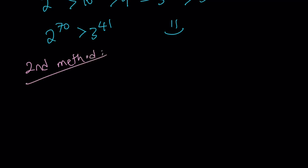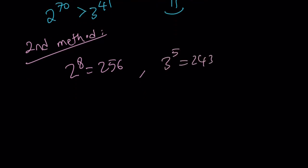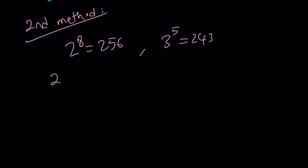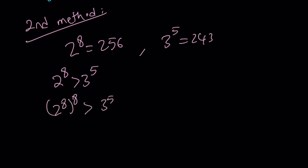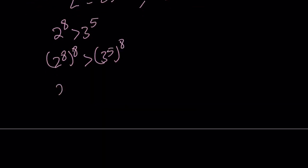My second method involves using powers of 2 and 3 instead of using a 10. We have 2 to the power 8 equals 256, and 3 to the power 5 equals 243. Again, those numbers are pretty close. So from here we can safely say that 2 to the 8th power is greater than 3 to the 5th power. Now let's go ahead and raise both sides to the 8th power, and this gives us 2 to the power 64 is greater than 3 to the power 40.